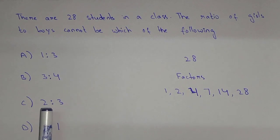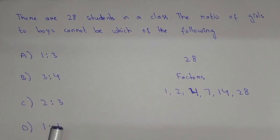So 2 is to 3, that is 2 plus 3, that is 5. So 5 is not a factor, it means this cannot be the ratio. So 1 is to 1, that is 14 girls and 14 boys. 1 plus 1, that is 2. And 2 is a factor, it means this cannot be answer as well.